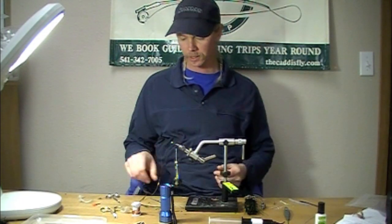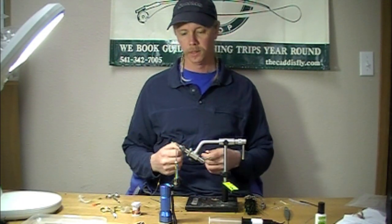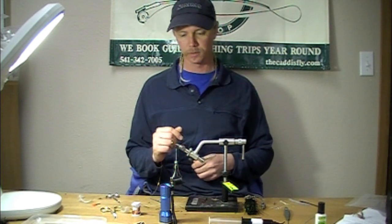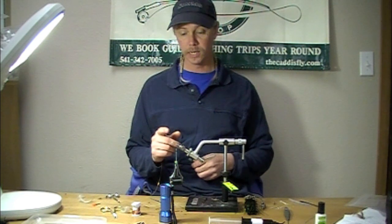Good morning, we're going to be tying a classic called the Copper John. I've got a 3761 hook matched to the size of the bead, a tungsten bead to help get that thing down there extra quick.